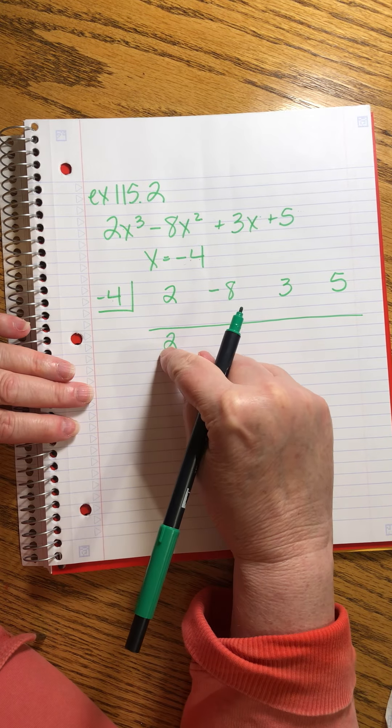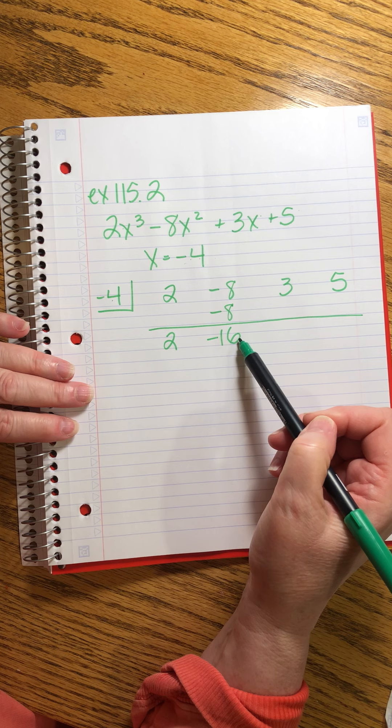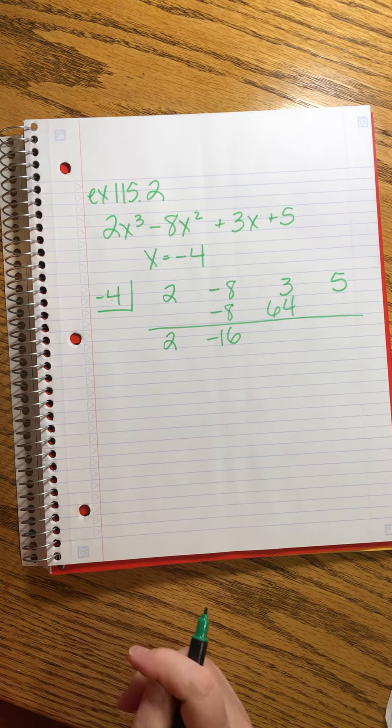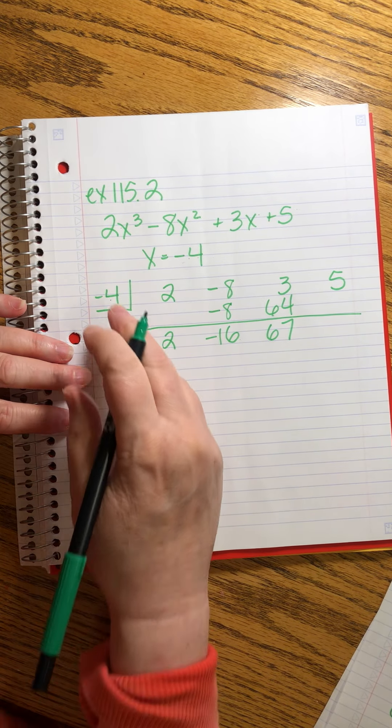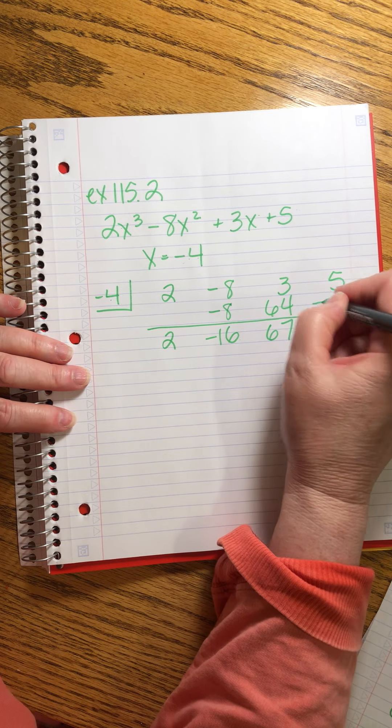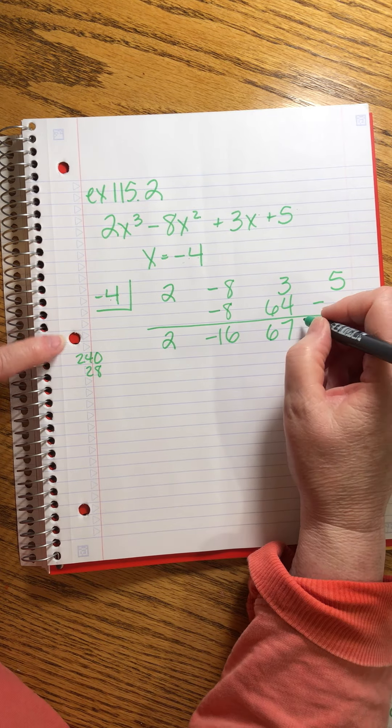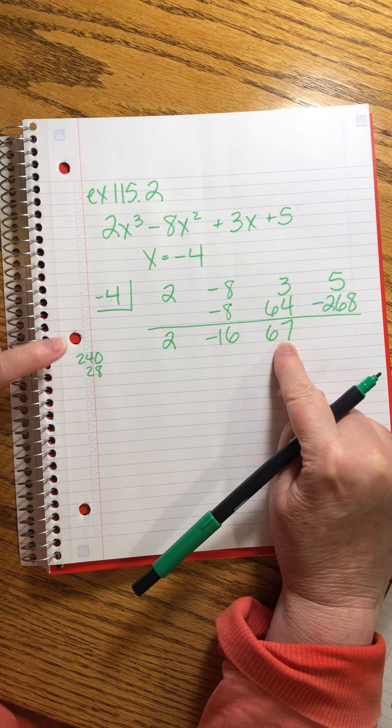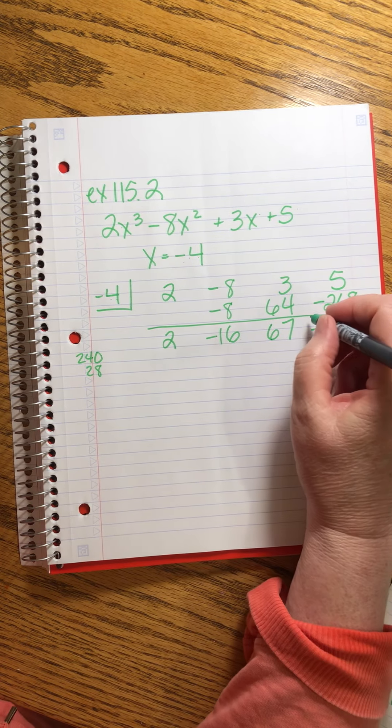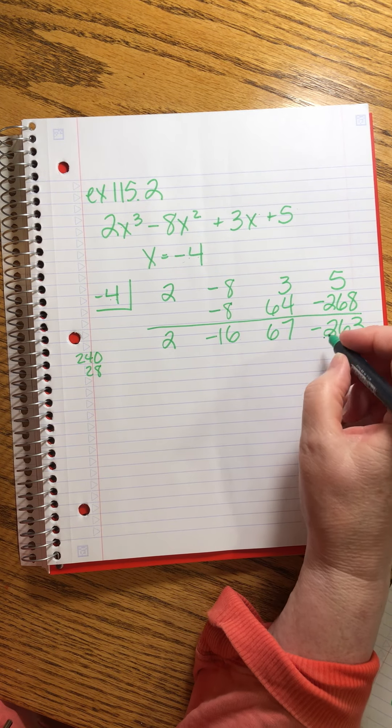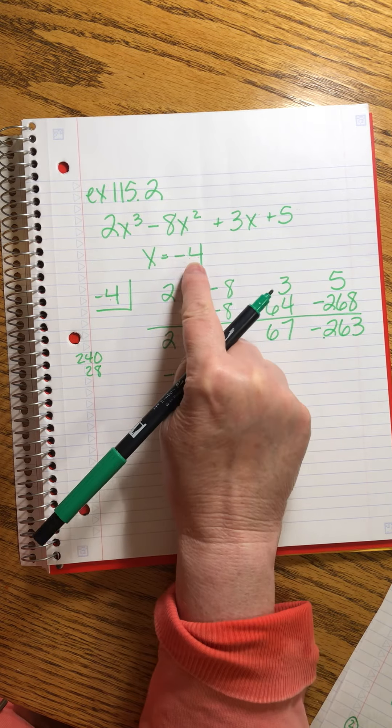We bring down the 2. Minus 4 times 2 is minus 8. That's minus 16. Minus 4 times minus 16, let's see, that's 64 positive. That's 67. Now 4 times 67, it's going to be a negative, I'm going to put the negative there, and let's just go over here. 4 times 60 is 240, 4 times 7 is 28. So that's 268 minus, right, because positive minus. And then this becomes minus 263. What that tells us is that this is the remainder, and so this is also the value of that function. So minus 263 is the value of this function when we plug in minus 4.